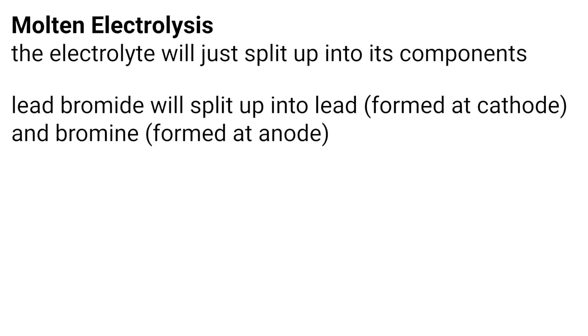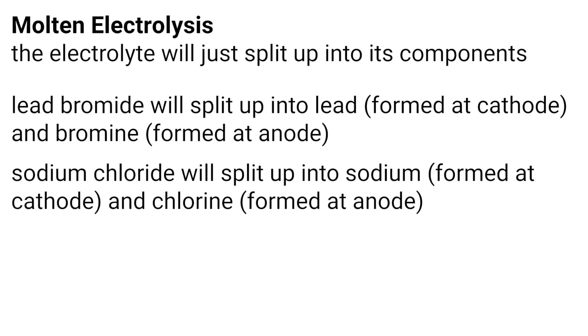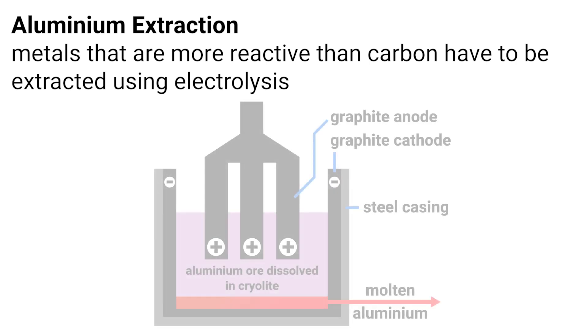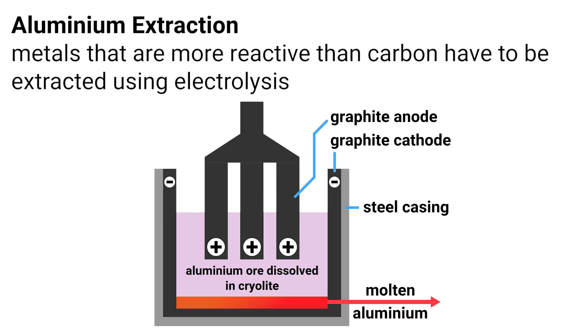So what we can do instead is molten electrolysis. This is really easy to figure out what products are going to be made, as it's just the two components that made up the ionic salt to start with. For example, lead bromide will be split up into lead and bromine, and sodium chloride will split up into sodium and chlorine. Metals that are more reactive than carbon are actually extracted using electrolysis. Aluminium oxide is insoluble in water, so it has to be molten anyway to be extracted as an electrolyte. A lot of energy must be transferred to break aluminium's ionic bonds, and this is expensive.